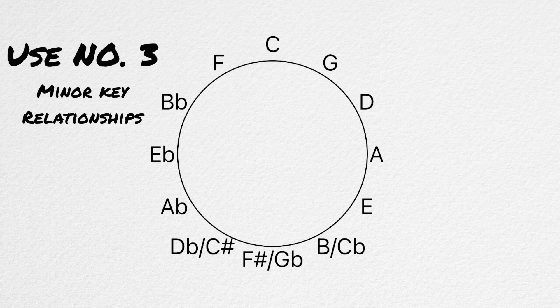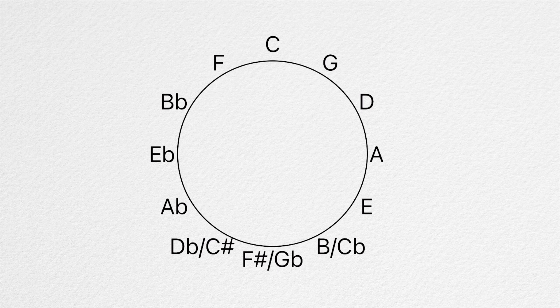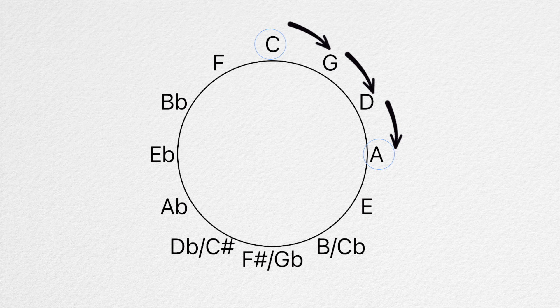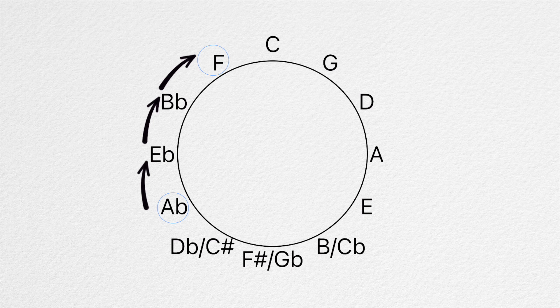The circle can also help us memorize the minor key relationships. Some circles already have this built in, such as this one, but if not, we can find the answer on the basic circle as well. Moving three steps clockwise from any point will give you the relative minor key of your starting point. The relative minor key of F is D, and the relative minor key of A flat is F.